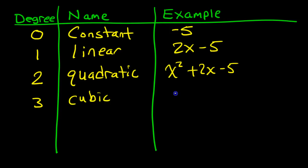If I had 2x to the third power plus x squared plus 2x minus 5, this would be cubic because of the third power.